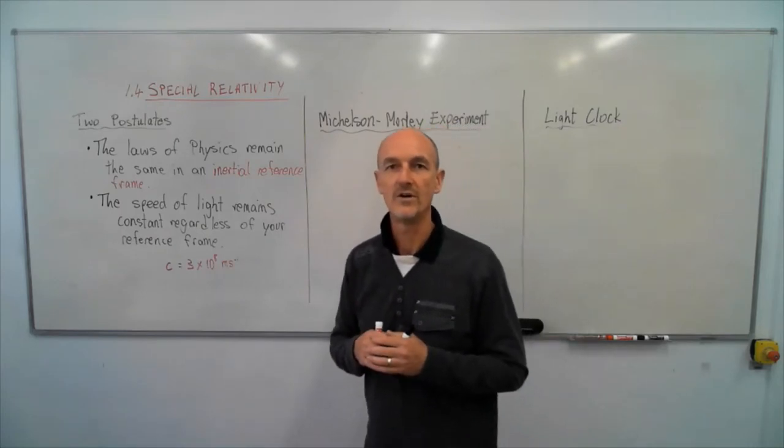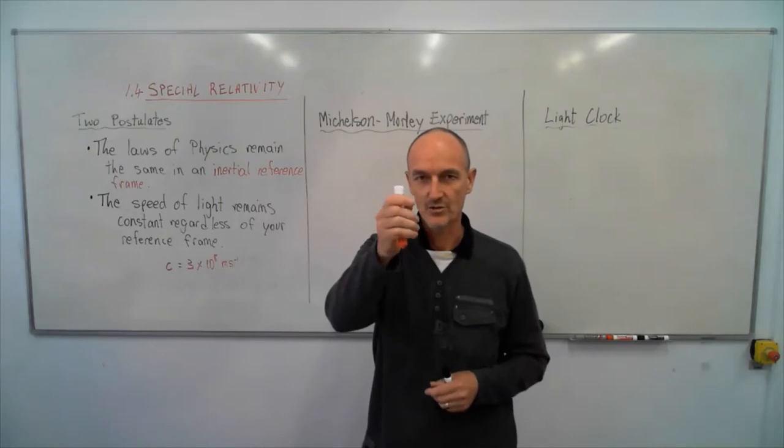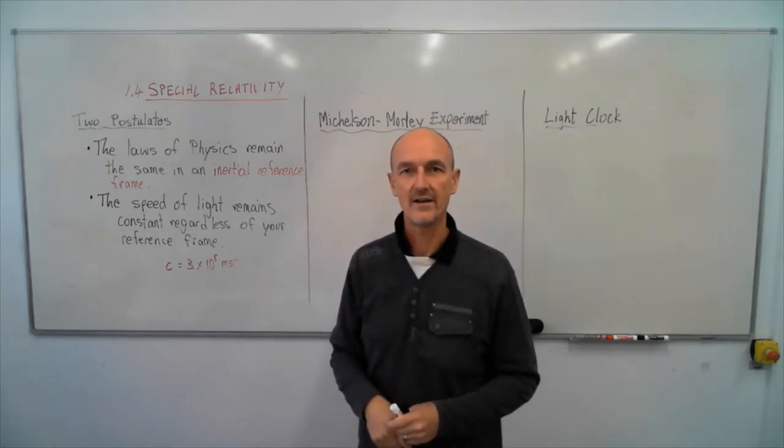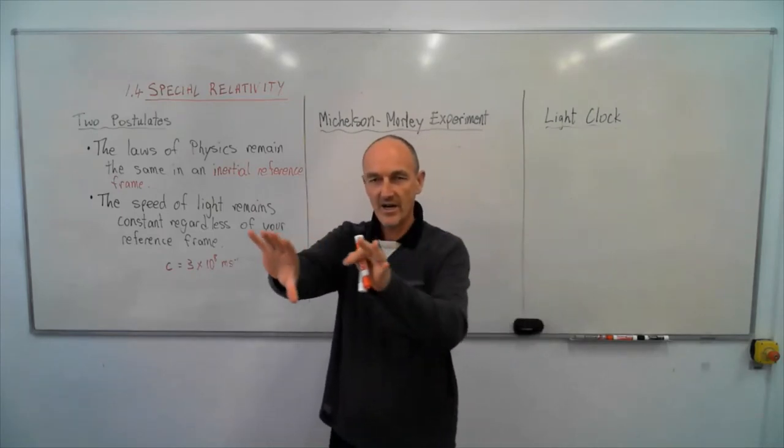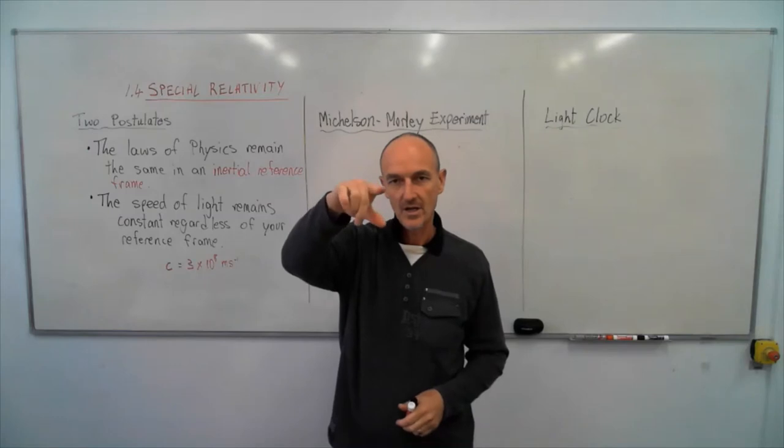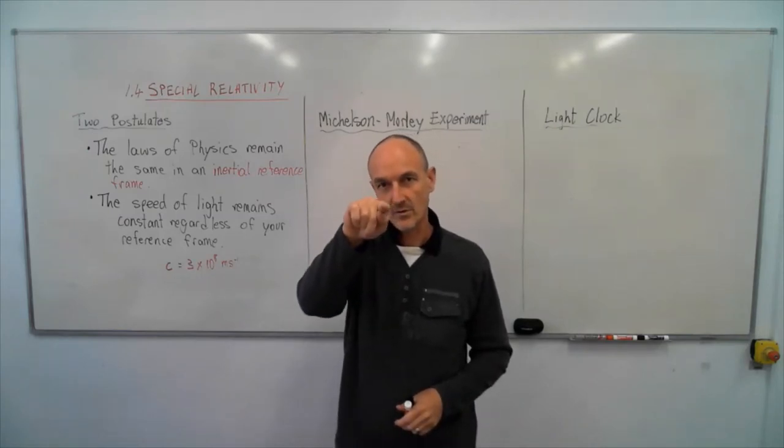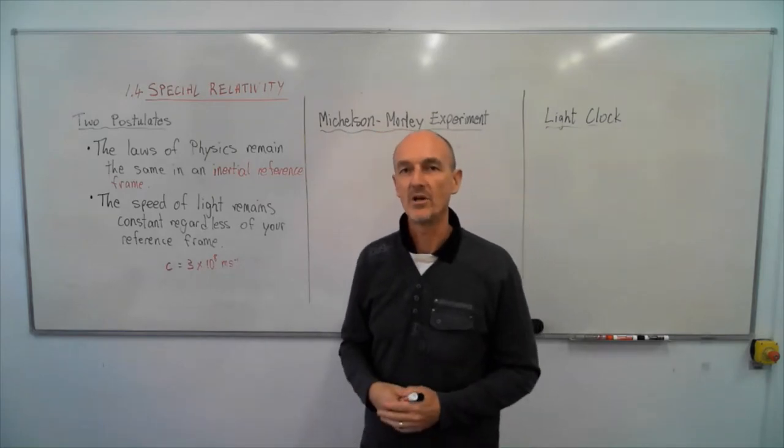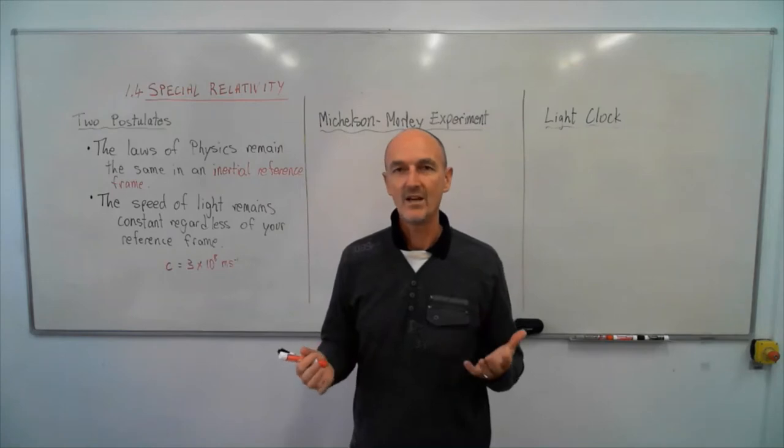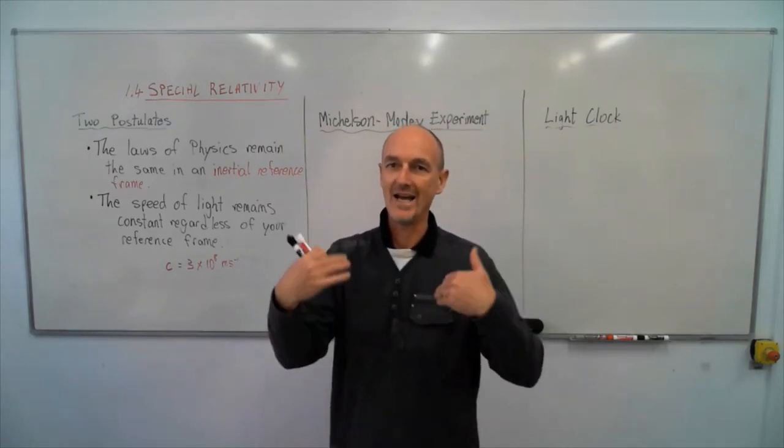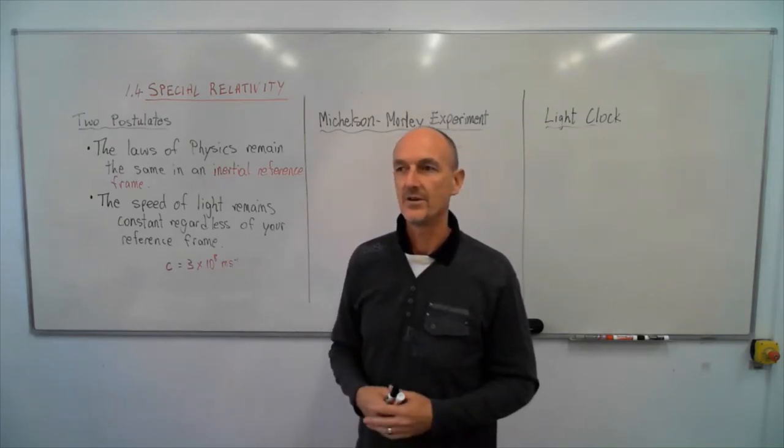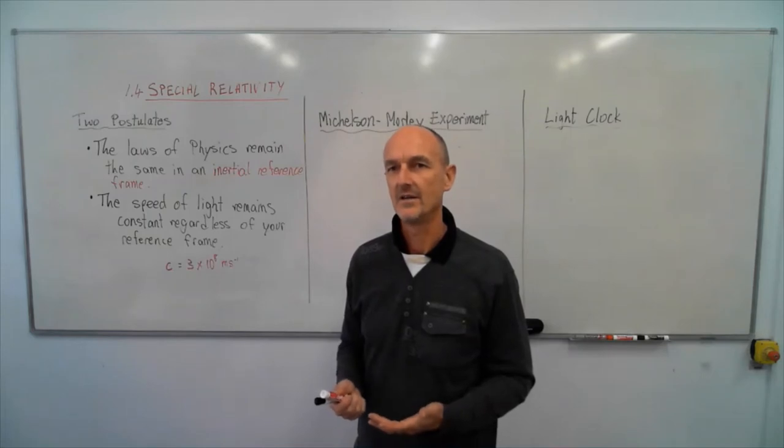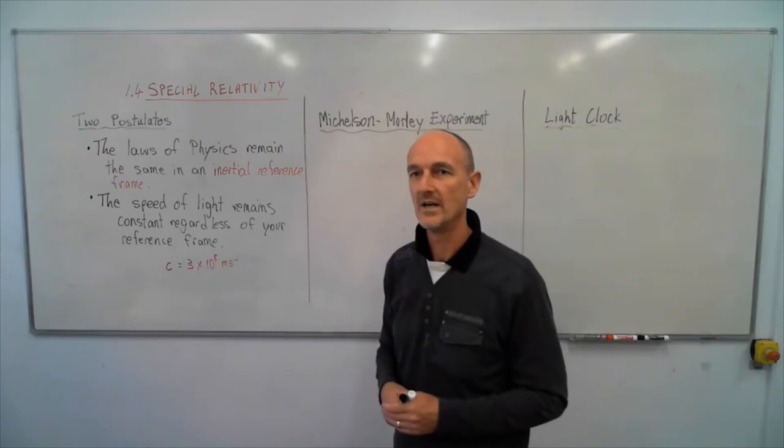Remember the example of a car driving past and something's dropped out of the window. If you're travelling along with the car, you'll just see the object fall straight down. But if you're outside of the car and you're seeing the car go past and something's dropped out of the window, you won't see it drop straight down. You'll actually see it moving with the car and then beginning to fall in a parabolic shape. Depending on the frame of reference that you're in, whether in the car or outside of the car, you'll actually see a different result. So when we say that the speed of light is constant no matter what the reference frame is, that's actually pretty surprising.